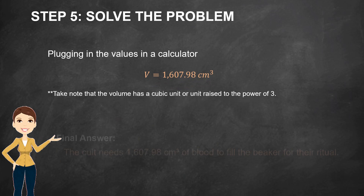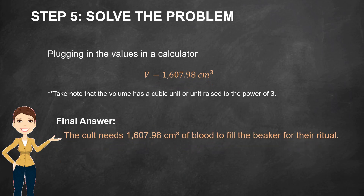Plugging in the values in a calculator, the cult needs 1,607.98 cubic centimeters of blood to fill the beaker for their ritual. Take note that the volume has a cubic unit, or unit raised to the power of 3.